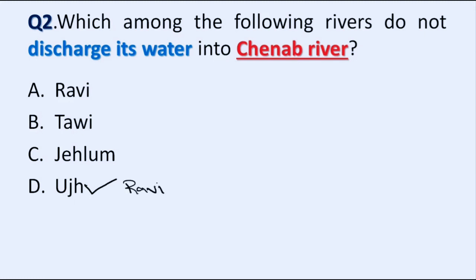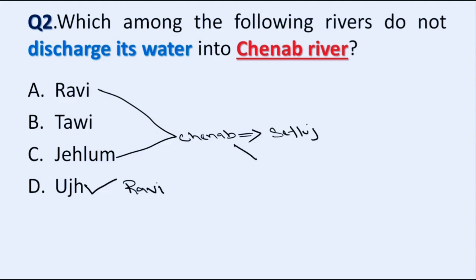All three rivers — Ravi, Tavi, and Jalim — drain their water into River Chenab. Later, River Chenab drains into the Sutlej River in Pakistan, and these two rivers form the famous Panjnad River in Pakistan, which then drains into the Indus River.